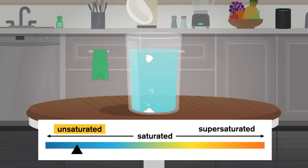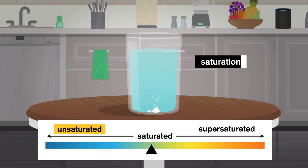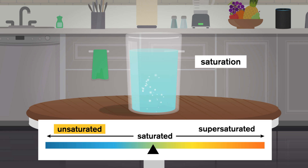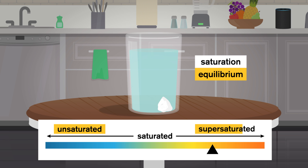If we add more salt, it'll dissolve into water until it reaches saturation — the point where the maximum amount of salt has dissolved. This is also known as equilibrium, where everything that can dissolve does. If the amount of salt goes past saturation, this is called a supersaturated solution, where any added solute will remain in its solid form or precipitate out.